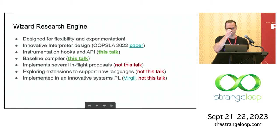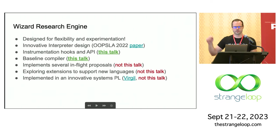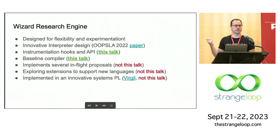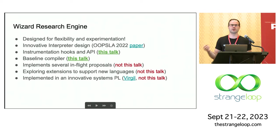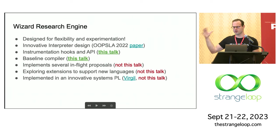So what is Wizard? Wizard is a research engine designed for flexibility and experimentation — that's going to be the highest priority. There's already a little bit of research coming out. I published a paper last year in Uppsala about the interpreter design. WebAssembly is typically compiled to machine code, and nobody thought it was really even possible to interpret it directly — and that's what that paper is about. I'll only briefly touch on that; it's not really the point of this talk, which is more of an overview.